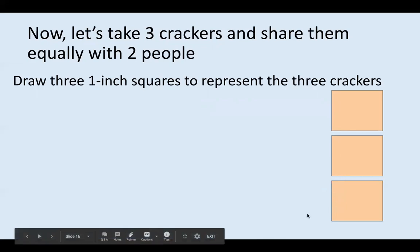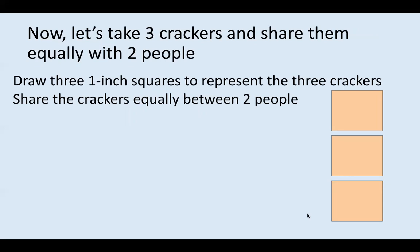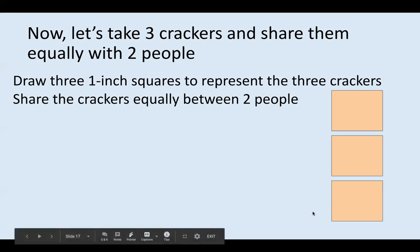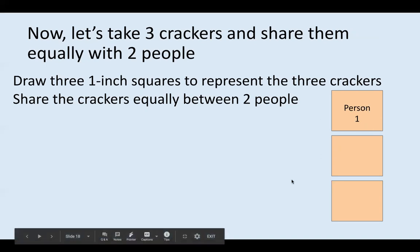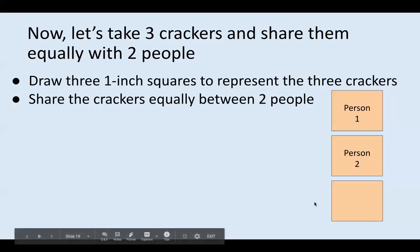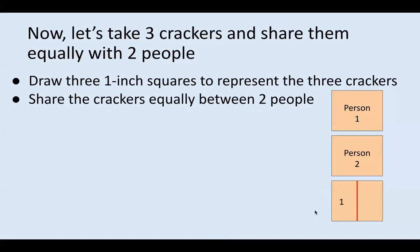Once your three squares are drawn, brainstorm how to share the crackers equally between two people. If you need to pause the video to give yourself time to think about this, that is okay. If I were to share these crackers equally between two people, here's what I would do: I would give person one the first cracker, person two the second cracker, and then take the third cracker and split it in half, giving person one one half and person two the other half. That's how my brain thought about it — you might have thought about it a different way, because there is more than one way to solve this problem.